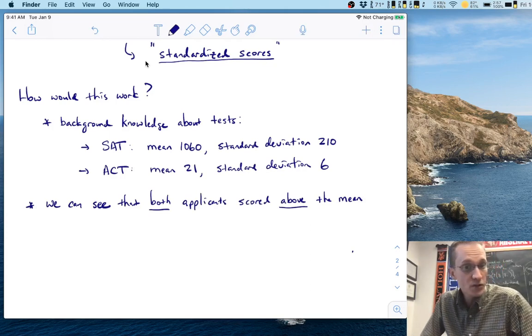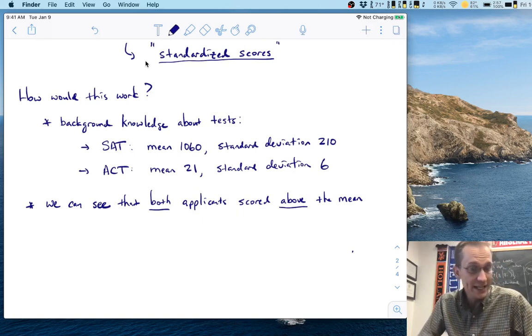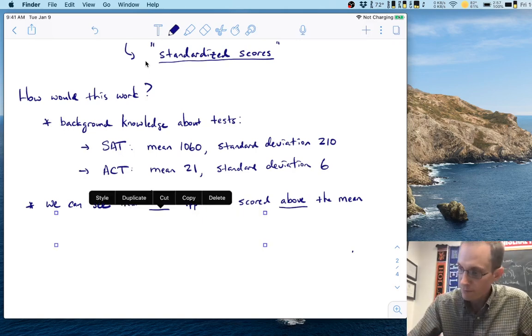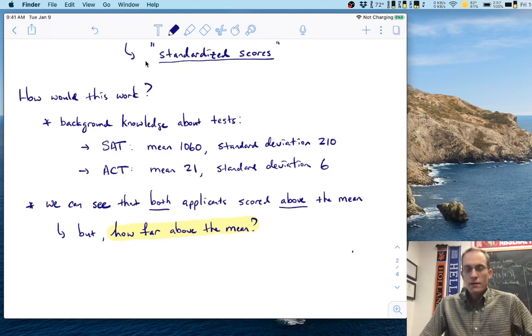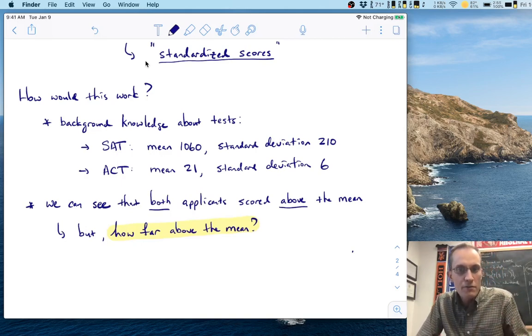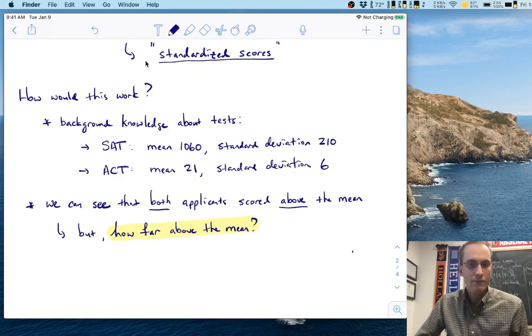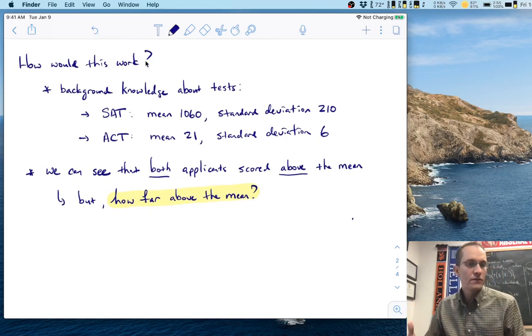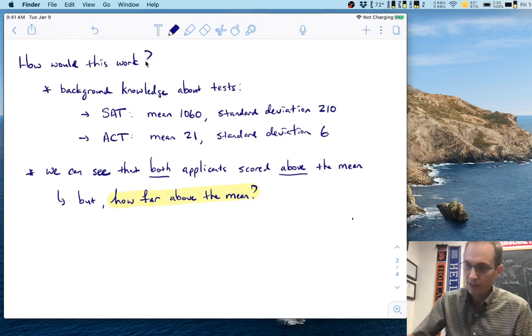So the SAT, people score on average 1060 with a standard deviation of 210. And the ACT, people score an average of 21 with a standard deviation of six. Now immediately, we can see that both of our applicants scored above the mean. Remember, applicant one scored a 1270 on the SAT. That's certainly above the mean of 1060. And applicant two scored a 30 on the ACT. That's above the mean of 21.